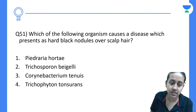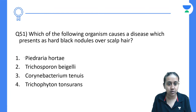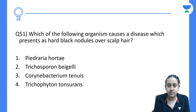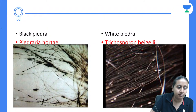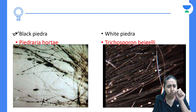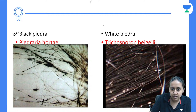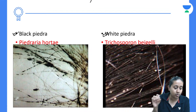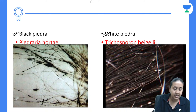Which organism causes a disease presenting as hard black nodules over the scalp and hair? The answer is option number 1 — this is a classical example of black Piedra, caused by Piedra hortae. You see small black hard nodules on the hair, and when you comb you can feel a gritty sensation. White Piedra has soft white nodules and is caused by Trichosporon beigelii.